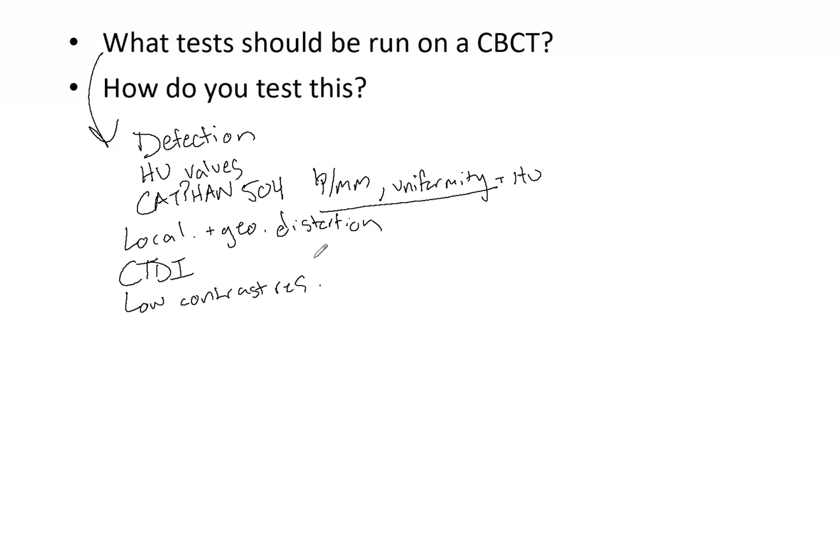For CTDI, you'll need your own system — a pencil ion chamber and specific phantoms to test for thorax and body. Know how to do that, and ideally you've done it yourself. For low contrast resolution, you can also use the CAT phantom, but there are dedicated phantoms like the Las Vegas phantom. Standard Imaging has a really good phantom that covers many of these tests. There are also dose analysis tools like Dose Lab or PIPS Pro — once you acquire a cone beam image of your phantom, you can import that image and run the tests on it.